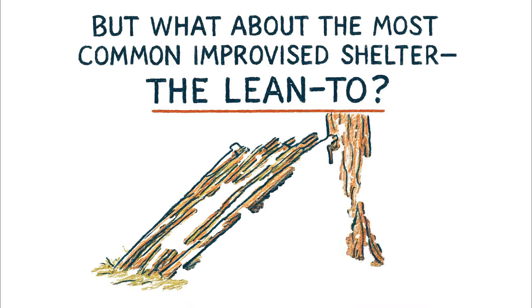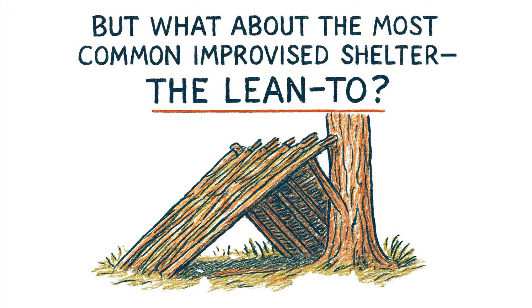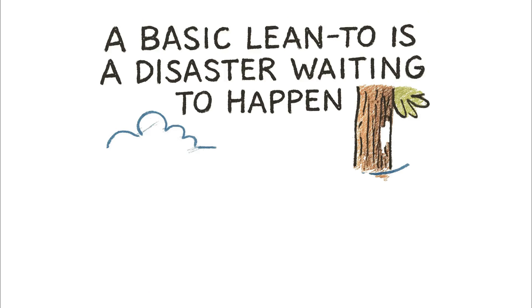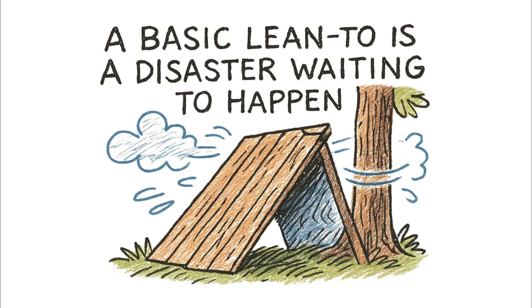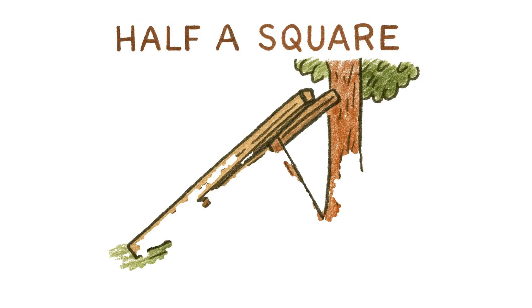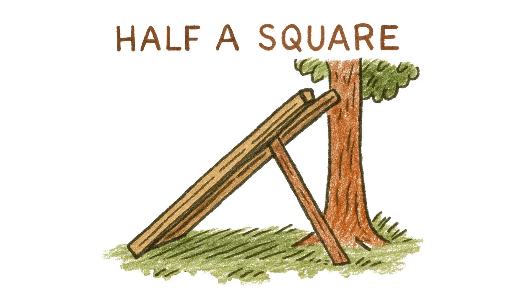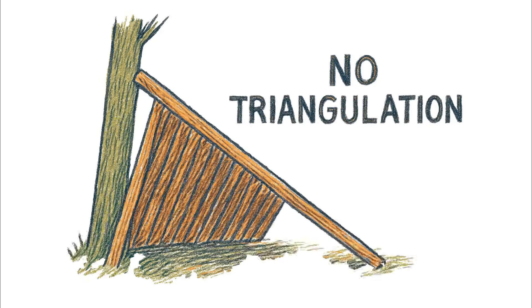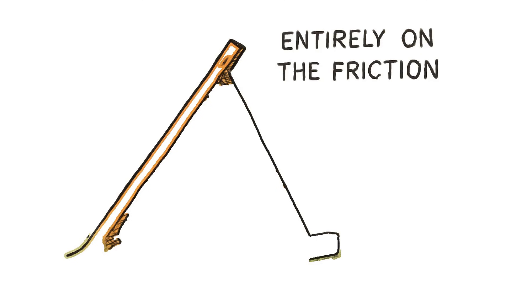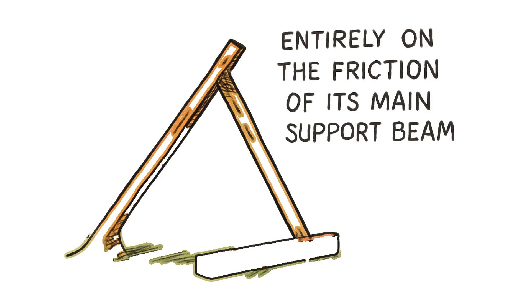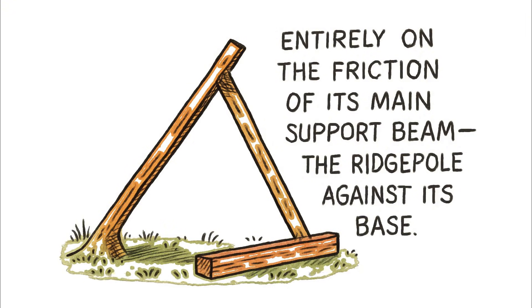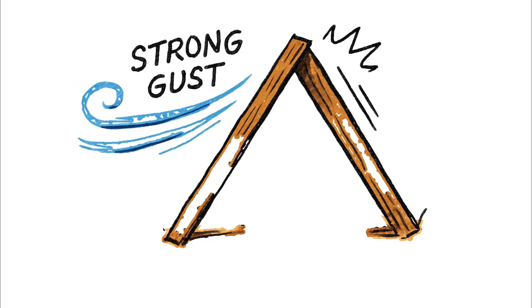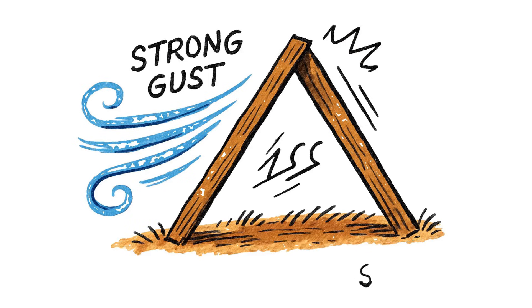But what about the most common improvised shelter, the lean-to? From an engineering perspective, a basic lean-to is a disaster waiting to happen. It's essentially just half a square propped up against a tree or rock — it has no triangulation. Its ability to stand relies entirely on the friction of its main support beam, the ridge pole, against its base. A strong gust of wind hitting it from the side can easily cause it to rack and collapse.